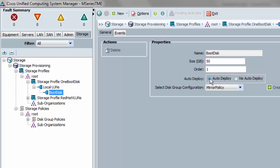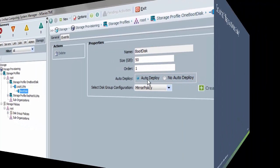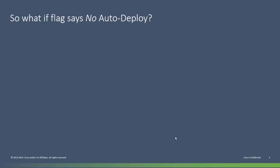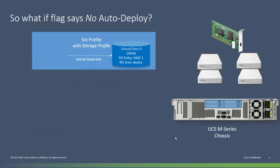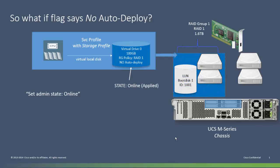What if the disk specification in a storage profile says no auto deploy? The difference is that when the service profile comes to life, the virtual disk specification is in an undeployed state. When I associate the service profile, it still doesn't allocate storage for this drive. I have to manually set the admin state to online for this virtual storage specification, and at that time the storage gets allocated and goes online applied. We're going to see later why you might want to do this.